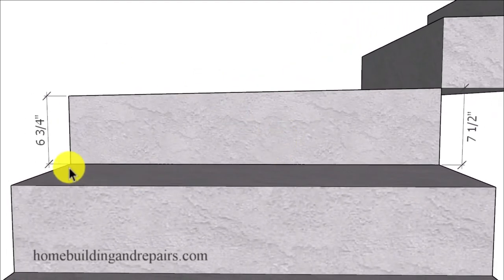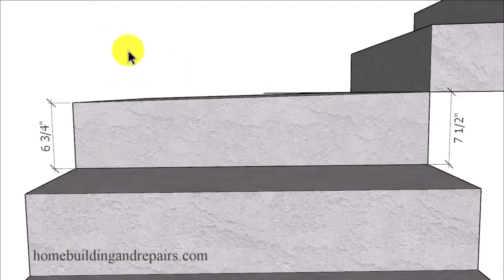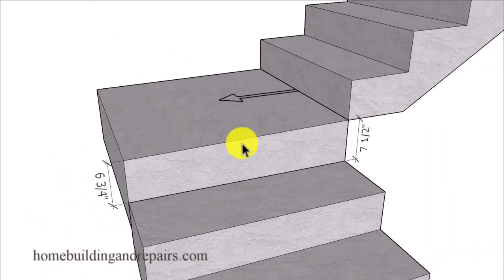So you are going to end up with riser heights that are going to be smaller on one end and taller on the other end, unless you're going to raise one side of the stairway up to build it a little out of level in the right to left direction also. However, I've never seen that done before and probably wouldn't recommend doing it.